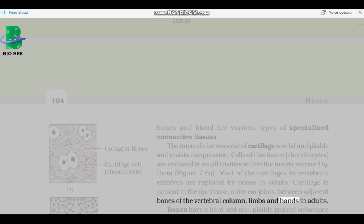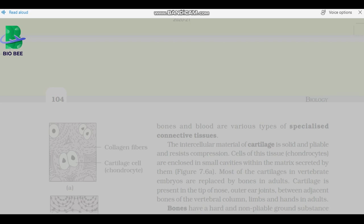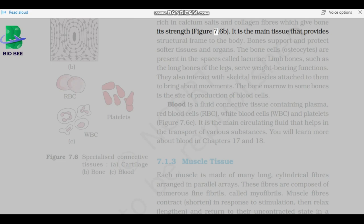Bones have a hard and non-pliable ground substance, rich in calcium salts and collagen fibers, which give bone its strength. It is the main tissue that provides structural frame to the body. Bones support and protect softer tissues and organs. The bone cells, osteocytes, are present in the spaces called lacunae. Limb bones, such as the long bones of the legs, serve weight-bearing functions. They also interact with skeletal muscles attached to them to bring about movements.